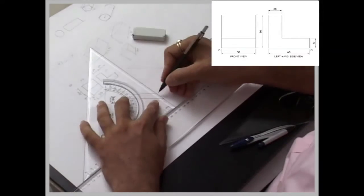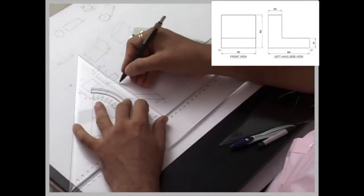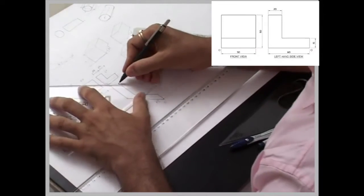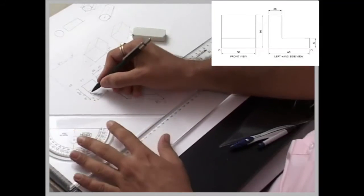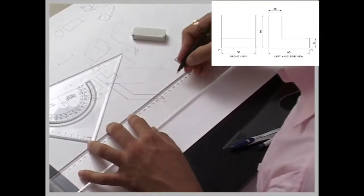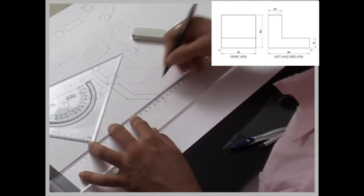So what we have done, we have drawn a side view. Now as you see, this is one surface. So that surface, I can draw it.